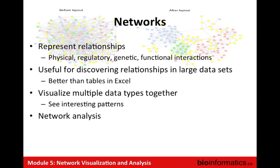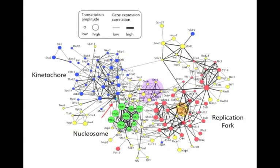Over the past decade or so — almost 15 years — a lot of people have developed very interesting network analysis algorithms. You looked at Reactome FI yesterday. Here's an example of a network — I think many of you probably read the Nature Biotechnology paper we sent out before about how to visually interpret biological networks. Some of the figures here are derived from that paper. This network is a network of protein interactions between yeast proteins, with a number of different types of information layered on it.